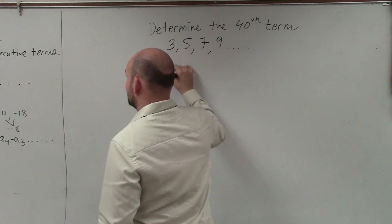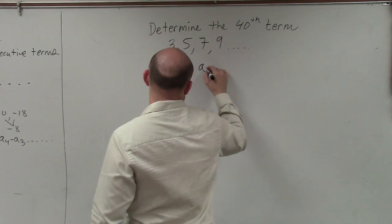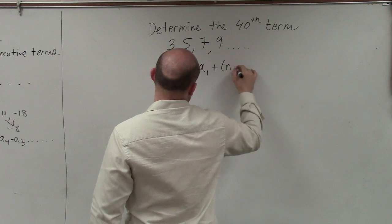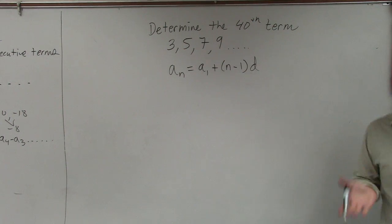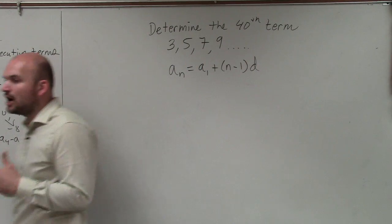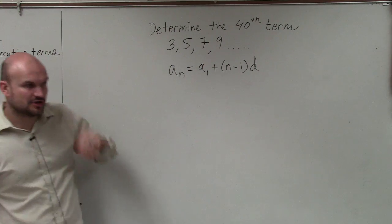So the explicit formula is a sub n equals a sub 1 plus n minus 1 times d. So now what we want to do is we need to determine what is the 40th term.